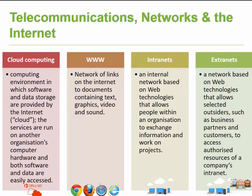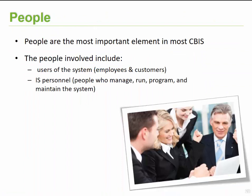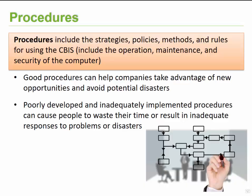The next component is people. For most systems to function, we need the enabling factor of people — they are considered the most important element. For example, a cell phone will just lie on a table doing nothing without human interaction; you need to pick it up, unlock it, select an application, and start interacting. The people involved are typically users such as employees and customers, as well as information systems personnel who manage, run, program, and maintain these systems.